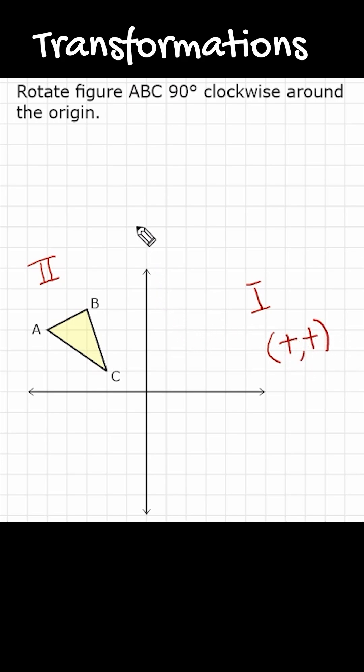So first, we have to identify the original coordinates. Point A is located at negative 5 on the X and positive 3 on the Y axis. Point B is located at negative 3, positive 4. And point C is located at negative 2 and positive 1.